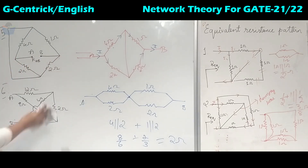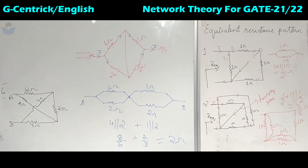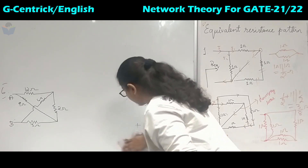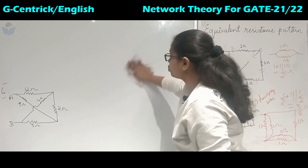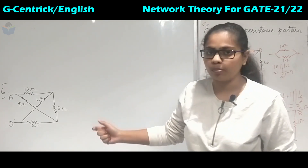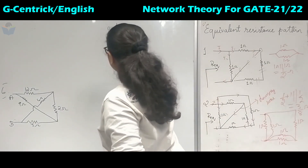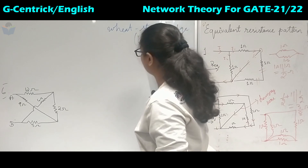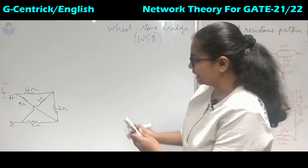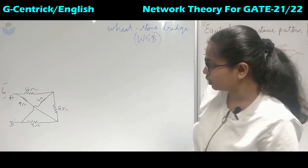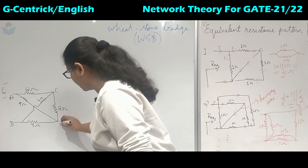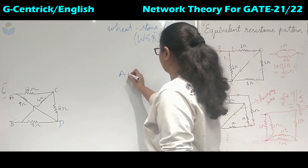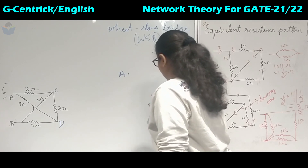Coming to the sixth question — it has 5 resistors. Whenever you encounter 5 resistors and find a zigzag pattern, in most cases it is a Wheatstone bridge problem (WSB). We will rearrange this into a Wheatstone bridge. Points A and B are given; let's assume the other nodes are C and D. Redrawing: point A, point B, point C, and point D.